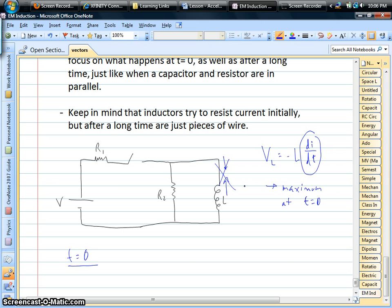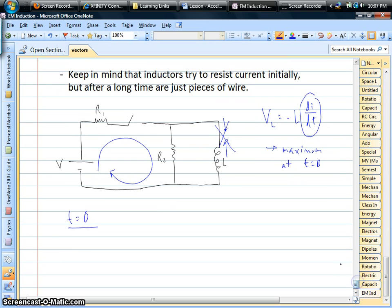So, effectively, your circuit, initially, is just this loop on the left, and the current's going to flow through the two resistors. So your initial current is actually the voltage of your battery divided by R1 plus R2.